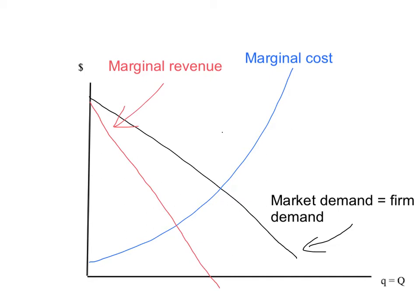To maximise profits, the monopoly will set the quantity where marginal revenue equals marginal cost — that will be QM. And it's going to sell that quantity for the highest possible price, given by the demand curve. So the profit maximising price for the monopoly is PM.